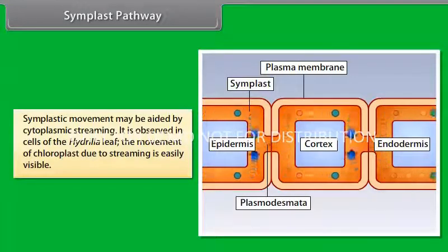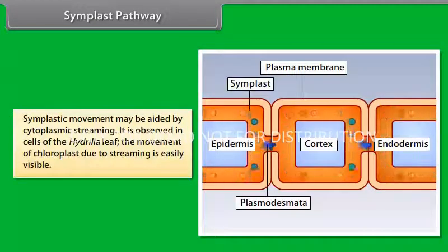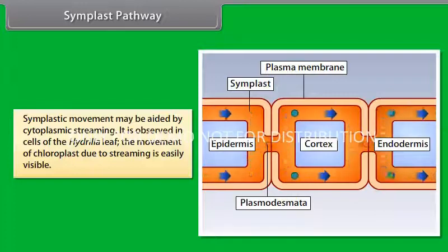Symplastic movement may be aided by cytoplasmic streaming. Cytoplasmic streaming is observed in cells of the hydrilla leaf. The movement of chloroplast due to streaming is easily visible.